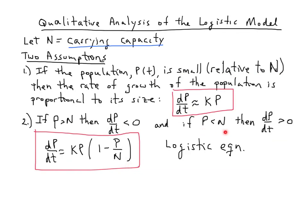If P is smaller than N, or smaller than the carrying capacity, then dP/dt needs to be positive. And if P is smaller than N, this ratio is smaller than 1. 1 minus something smaller than N is positive. kP is positive. Again, we see that our rate of growth is positive.